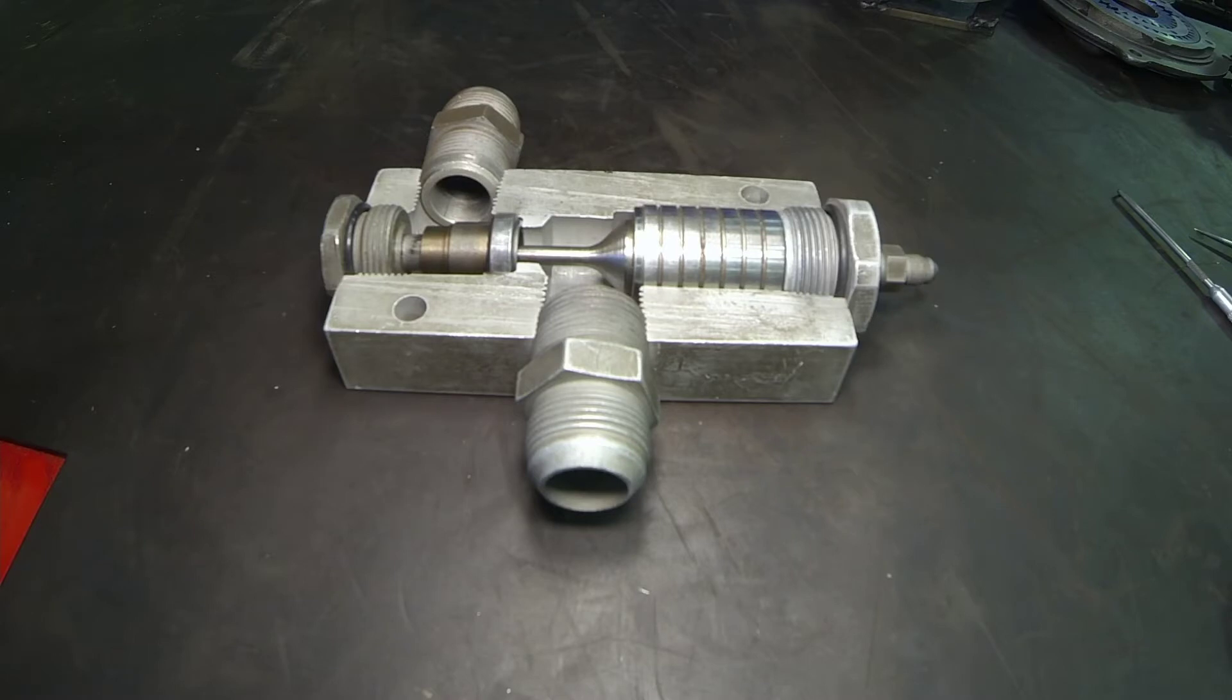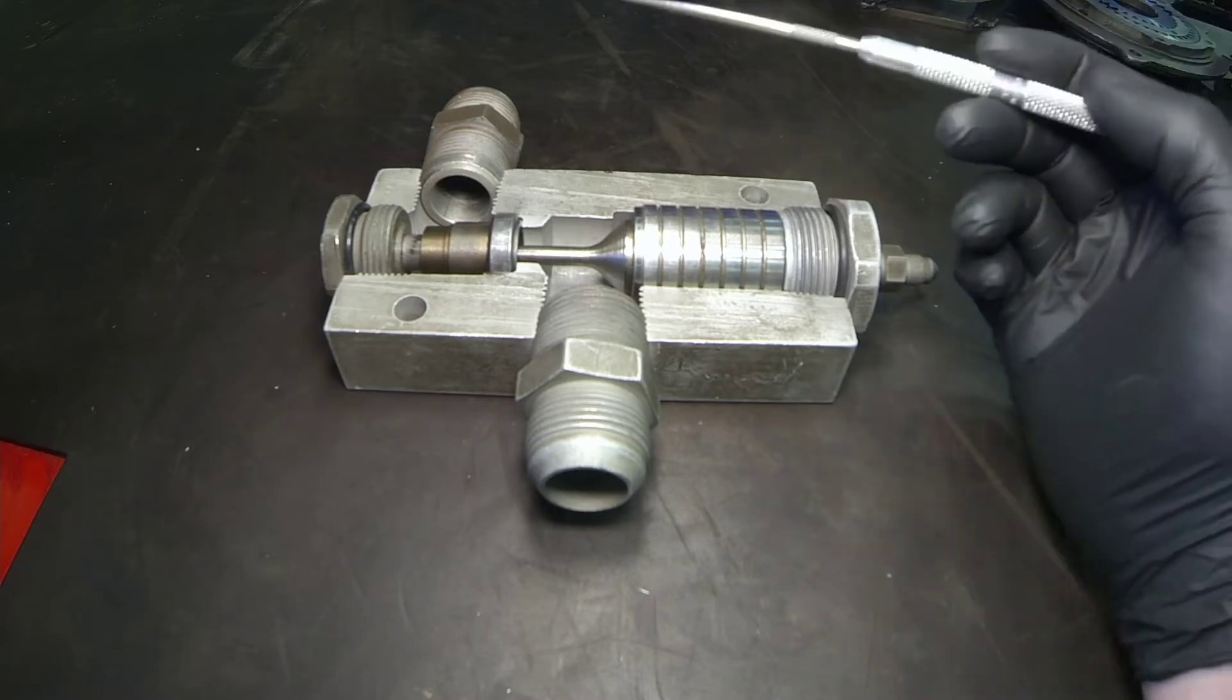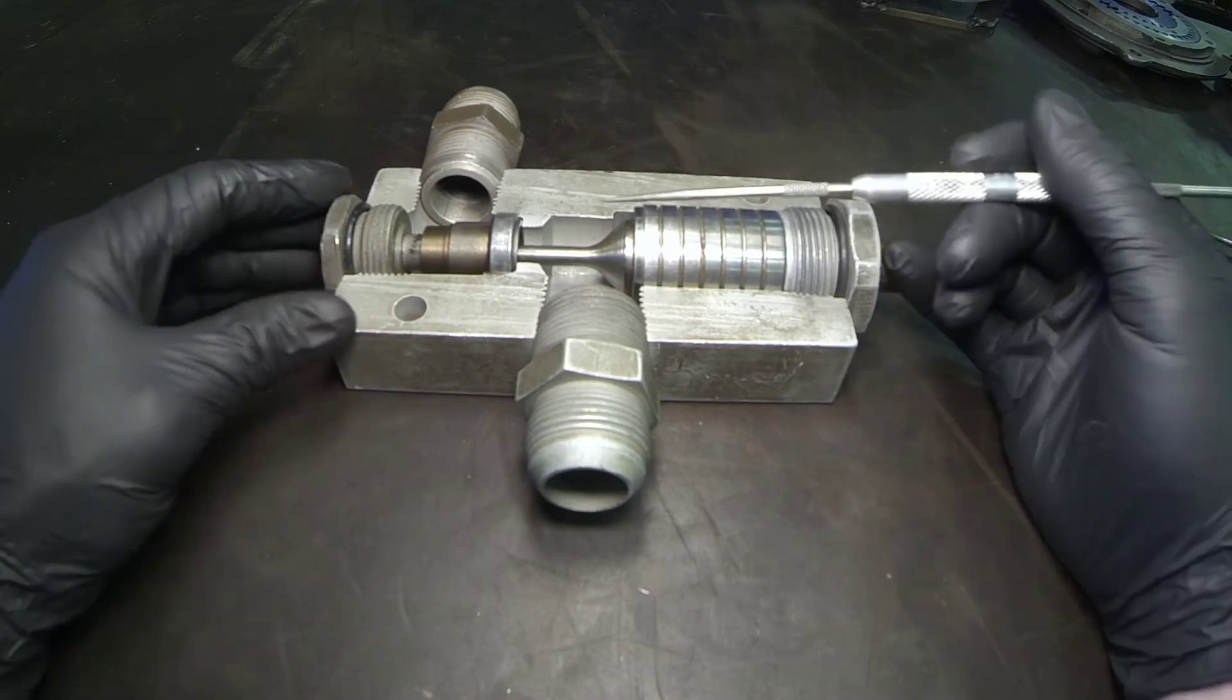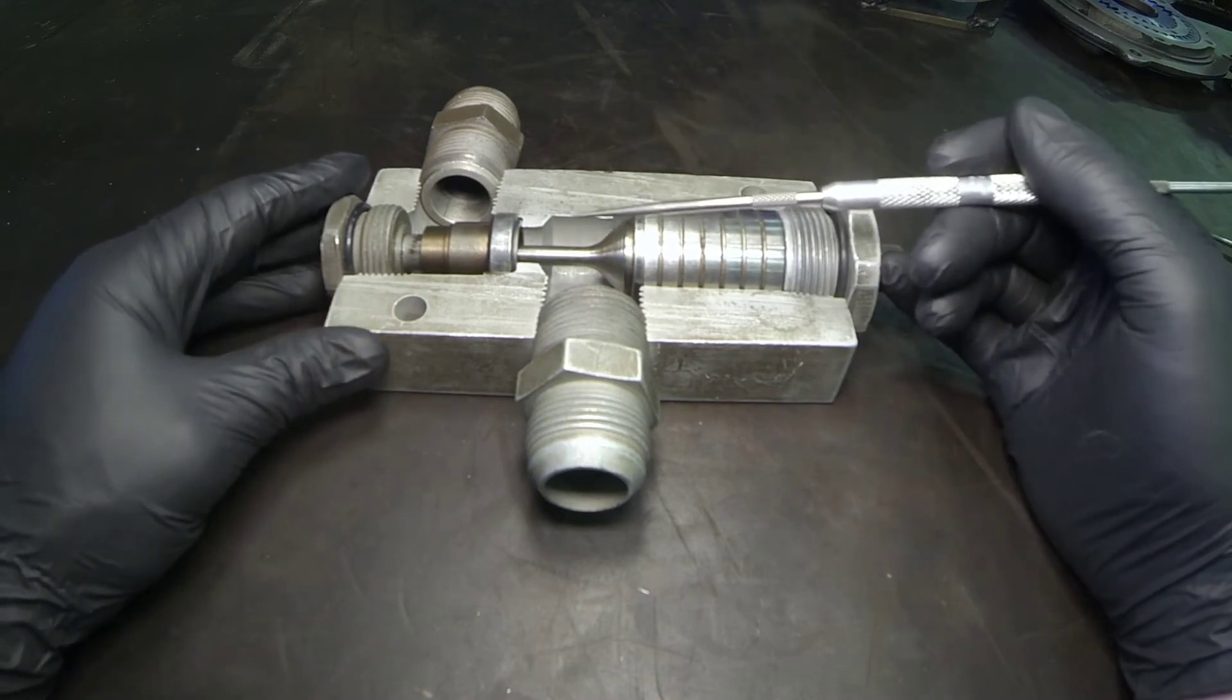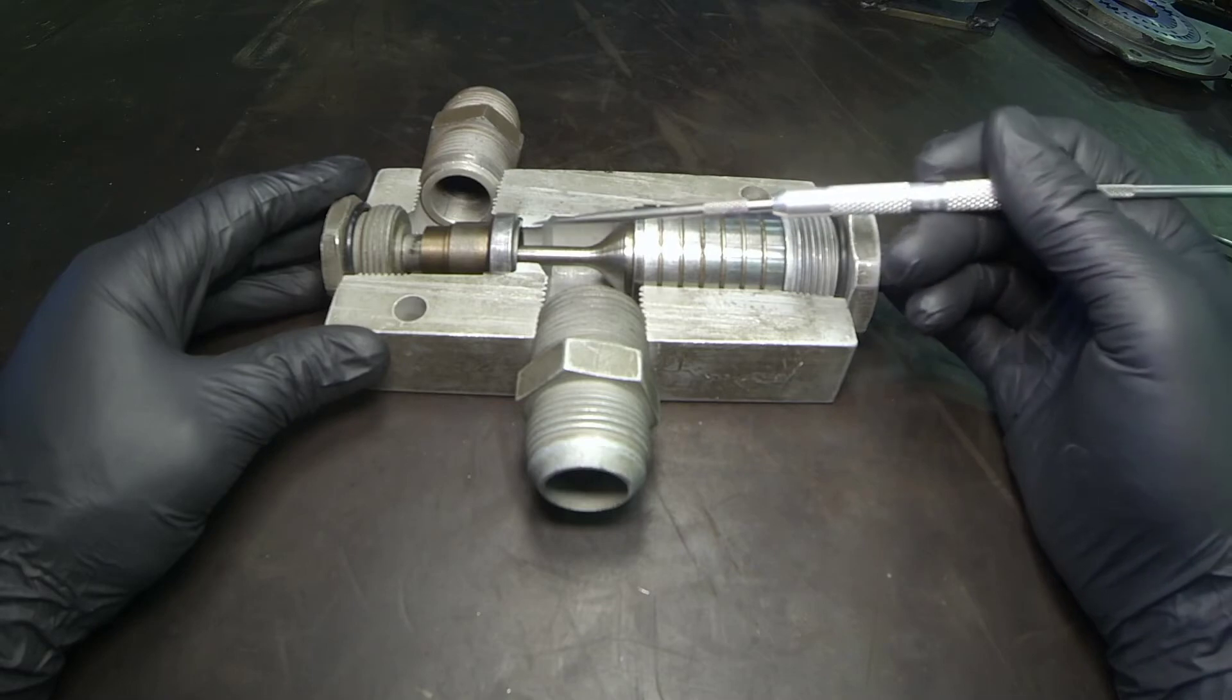Let's say we need to lock the base end of the cylinder. A valve like this would go in line from the directional control valve back to the base end of the cylinder.